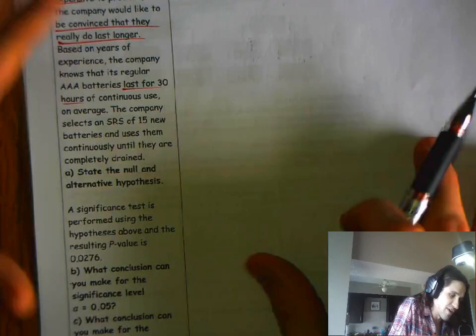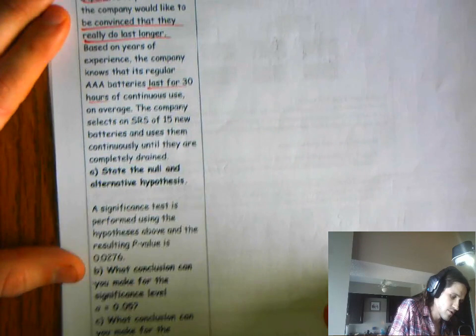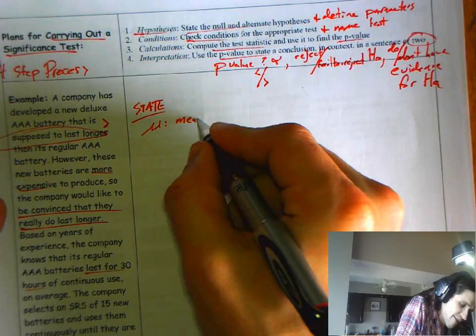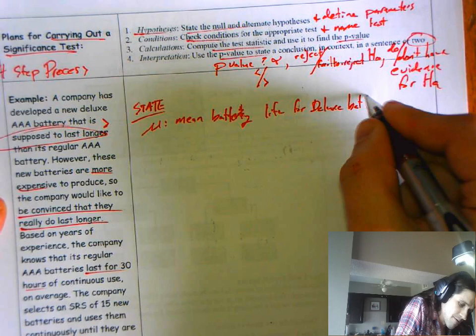State the null and alternative hypothesis. State step. What am I interested in? We know its regular batteries last for 30 hours. What am I probably talking about? Probably talking about mu, the mean battery life for the deluxe batteries.